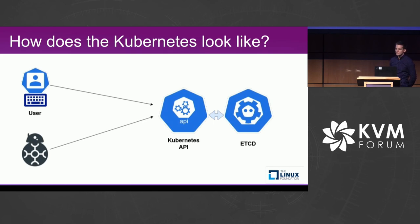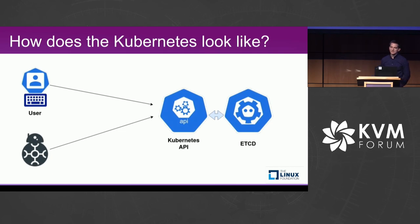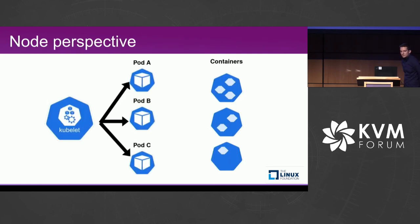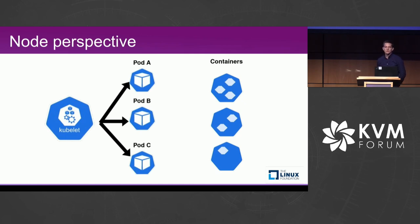When the user wants to run a workload, they need to find the schema, API version, and craft the spec of the containers they want. They post it to the Kubernetes API, which validates the schema and stores it in storage. After that, the scheduler picks it up and selects a node suitable for the containers to run on.